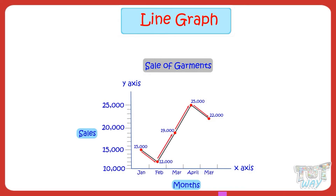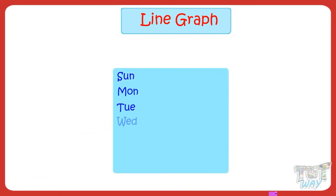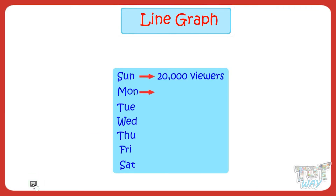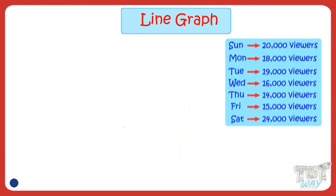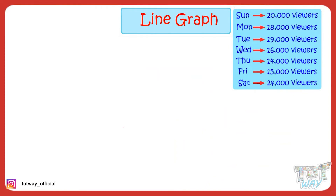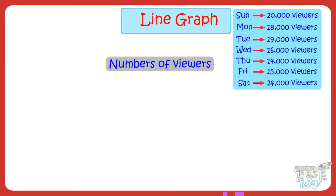So kids, we learned how we can make a line graph for given data and also how to read it. Now let's make one more line graph for practice. Number of people who watched a particular movie was noted down for a week: Sunday — 20,000 viewers, Monday — 18,000 viewers, Tuesday — 19,000 viewers. We have to draw this information into a line graph. First of all, let's give a title to our graph. Let it be 'Number of Viewers'. A graph always has two axes.